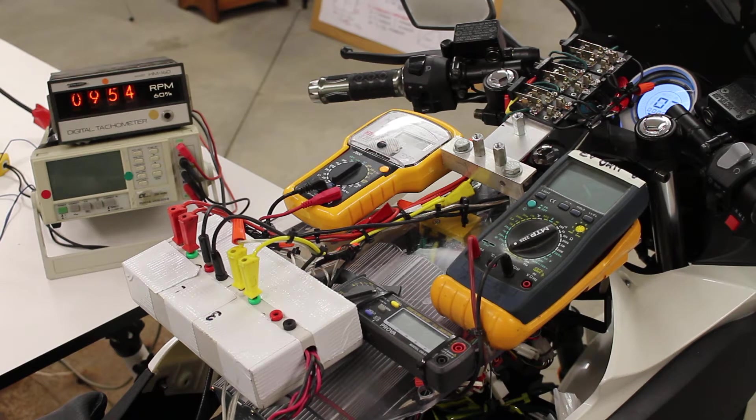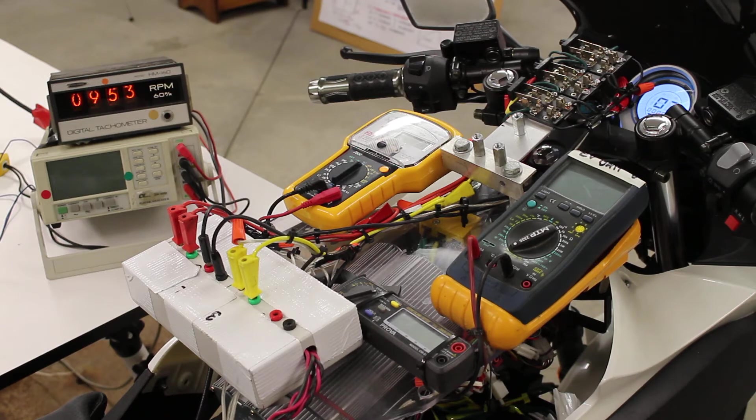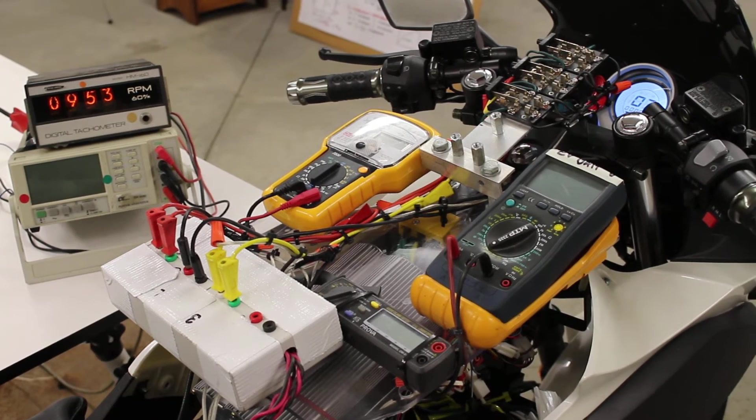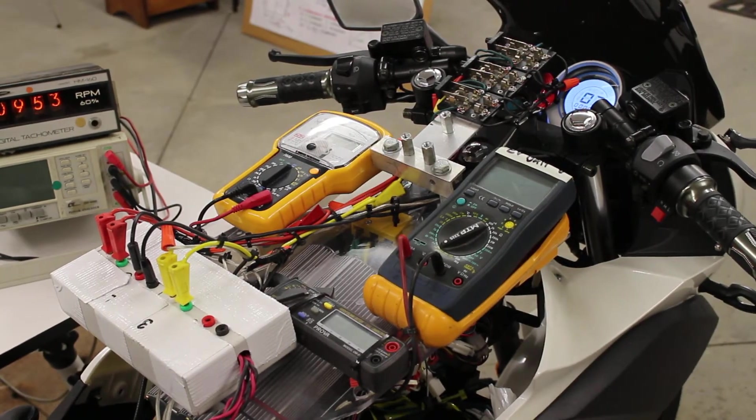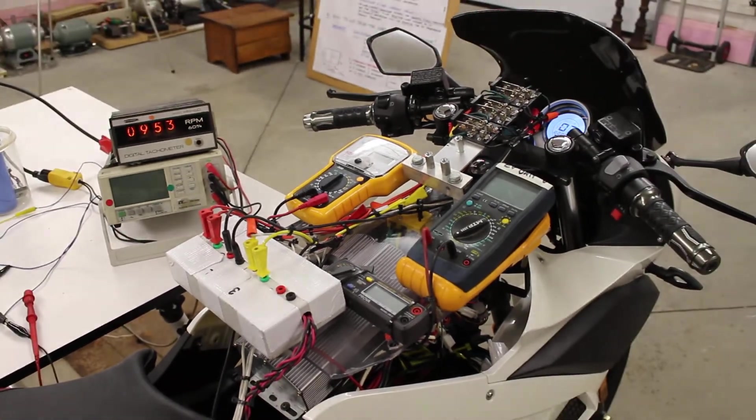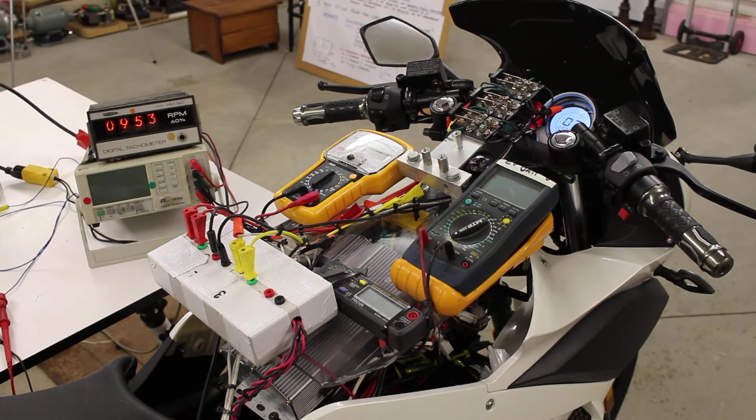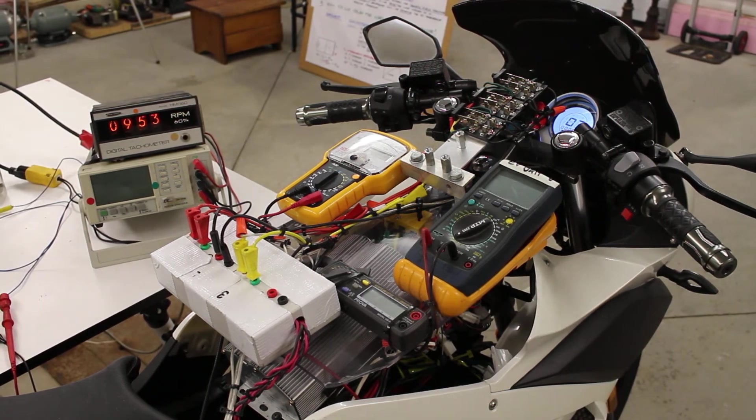We have a tachometer on the left hand side and then we have a current meter which I'm going to turn on in a sec. I'm going to bring the electric vehicle up to speed and we're going to use cruise control on the EV.